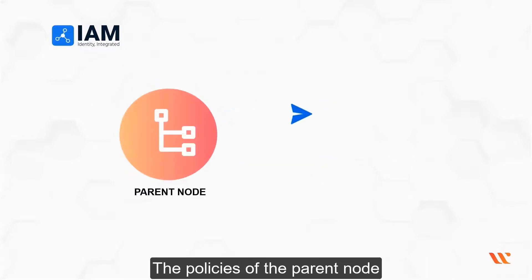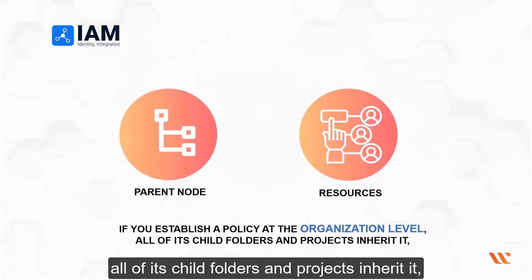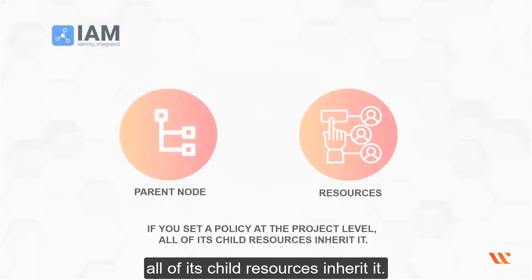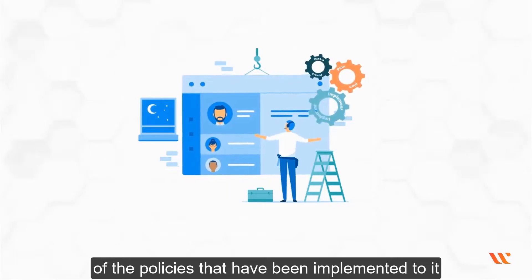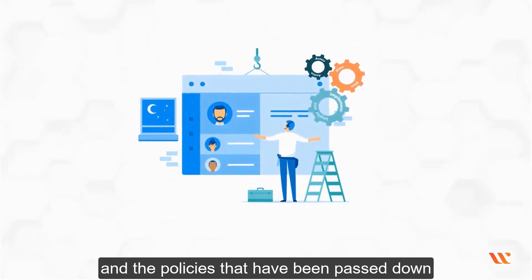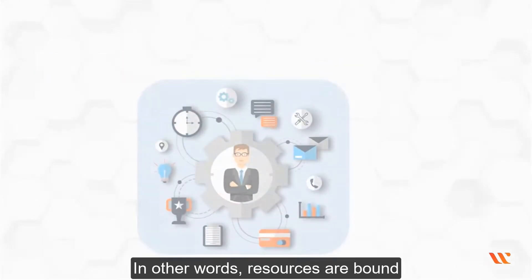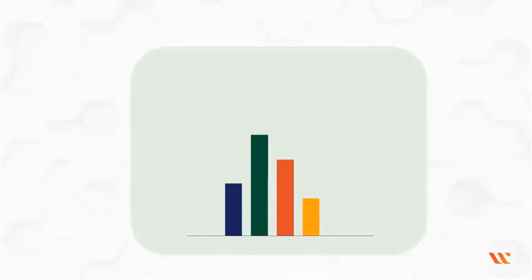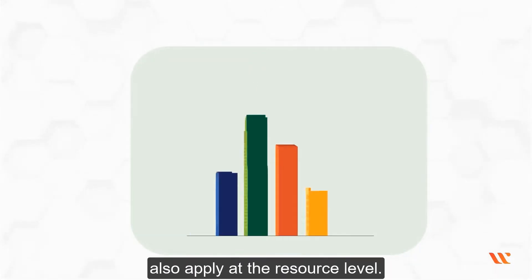The policies of the parent node are sent down to the resources. If you establish a policy at the organization level, all of its child folders and projects inherit it. And if you set a policy at the project level, all of its child resources inherit it. A resource's effective policy is the sum of the policies that have been implemented to it and the policies passed down from its predecessors — this is transitive inheritance. In other words, resources are bound by the policies of the project, which are bound by the policies of the organization. Policies that apply at the organization level also apply at the resource level.